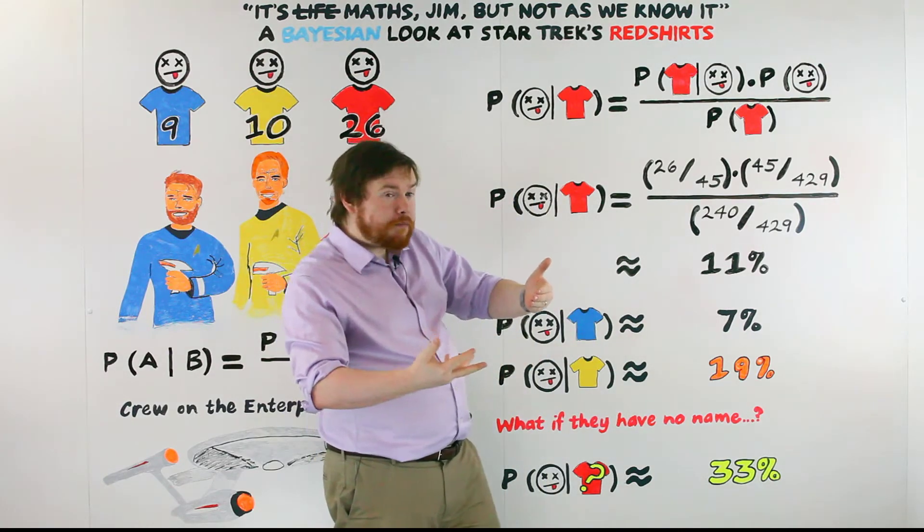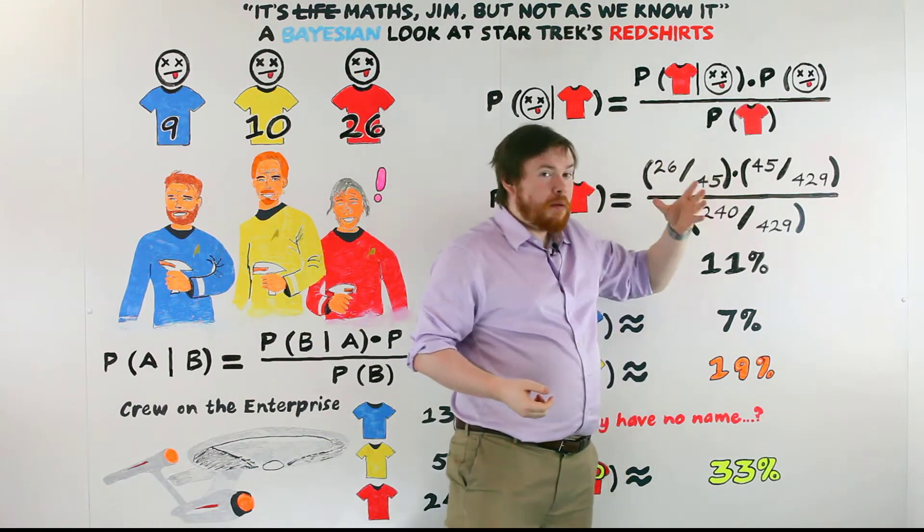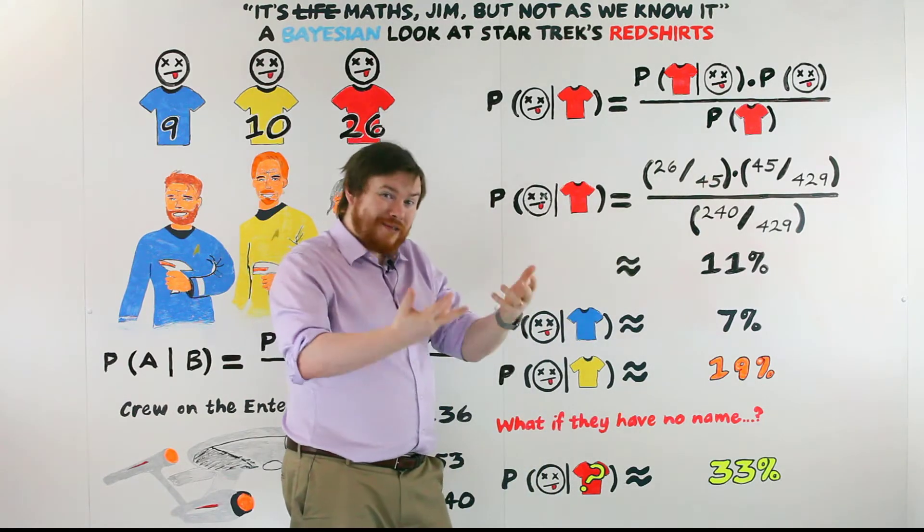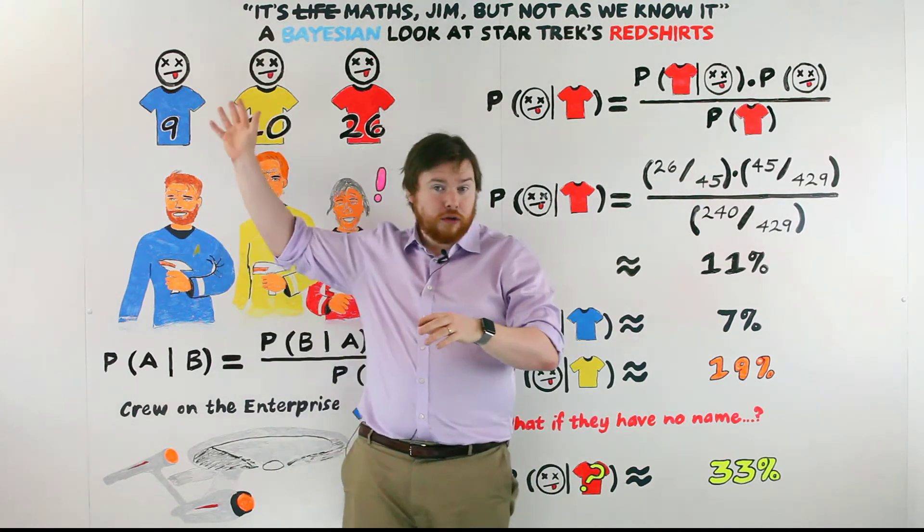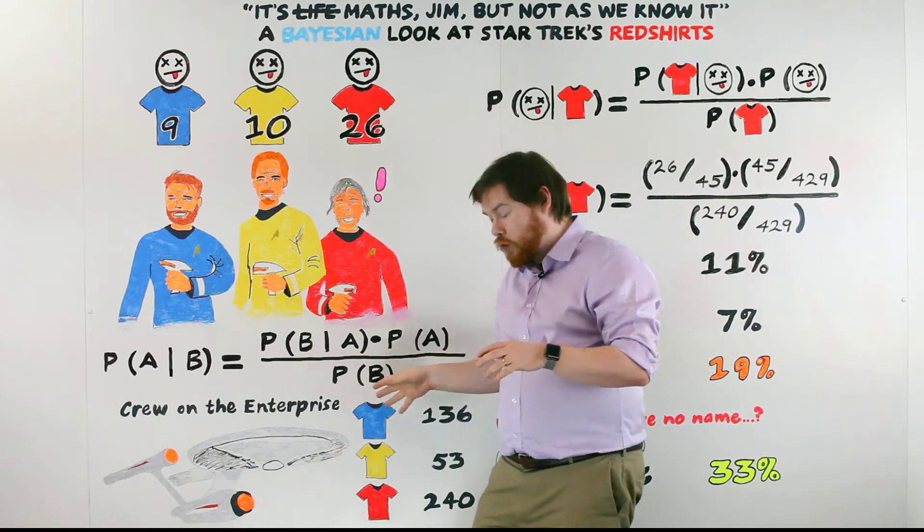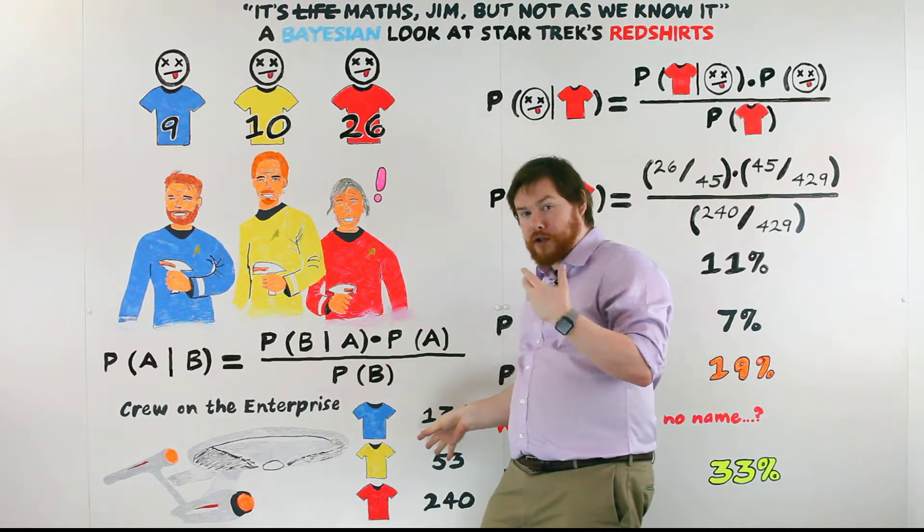We then got the prior, and that is the prior probability of dying in the first place. So that would be our total of 45 out of the total crew of the Enterprise of 429.